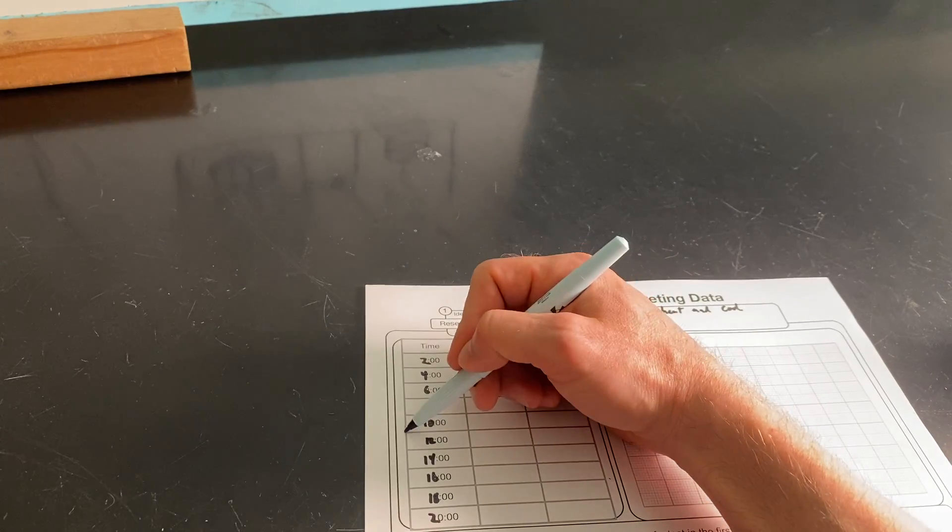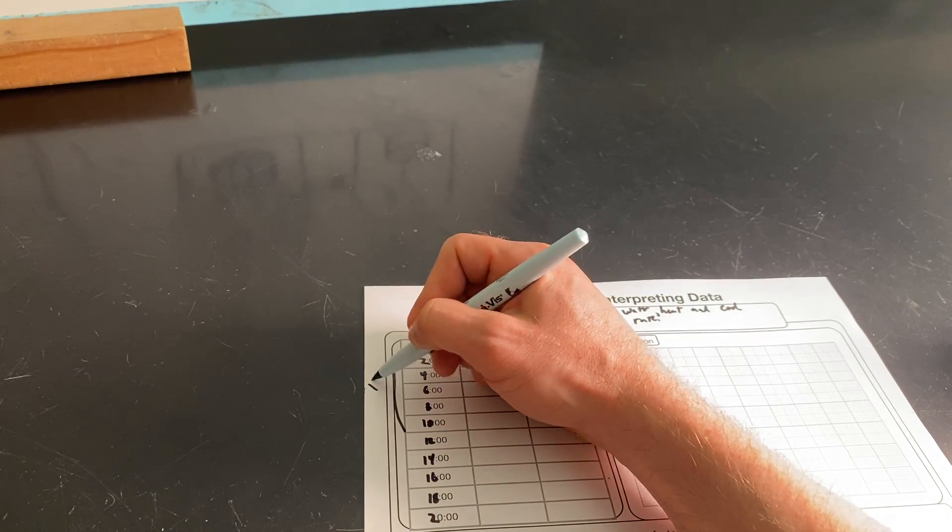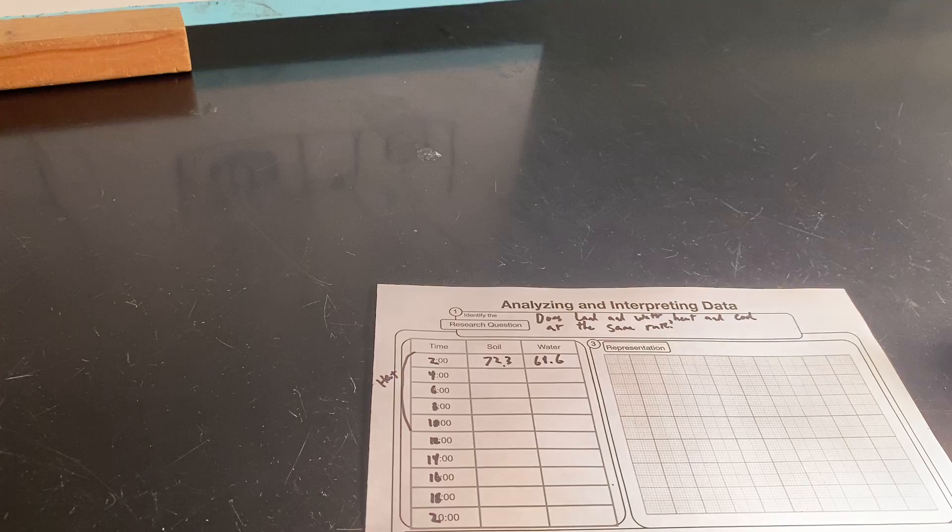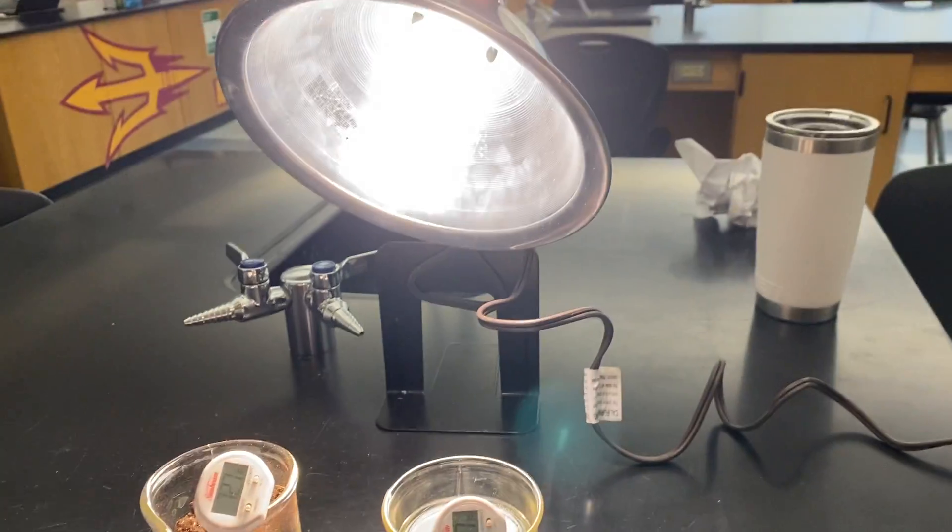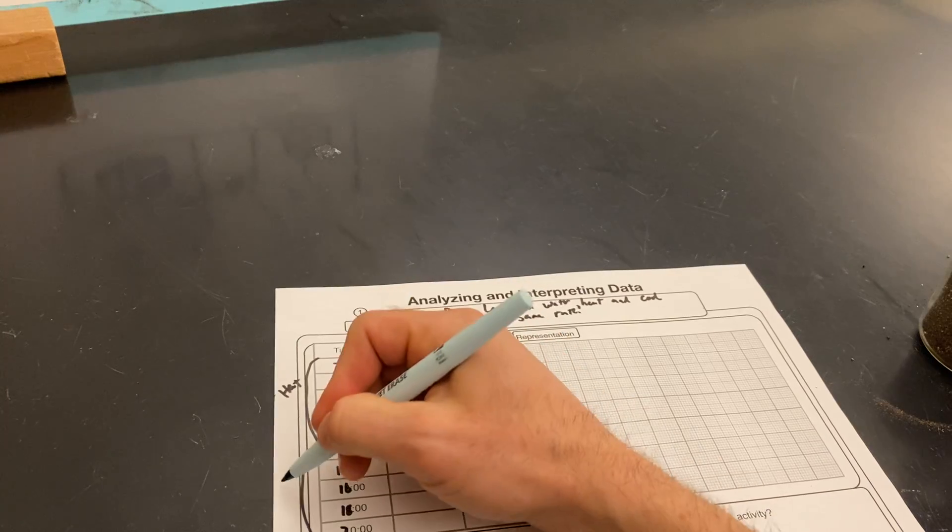So every two minutes you write the time. We'll let it heat for 10 minutes. After 10 minutes, then afterwards you shut it off and let's see, do they cool at the same rate? For our guiding question, we'll write 'cool' here.